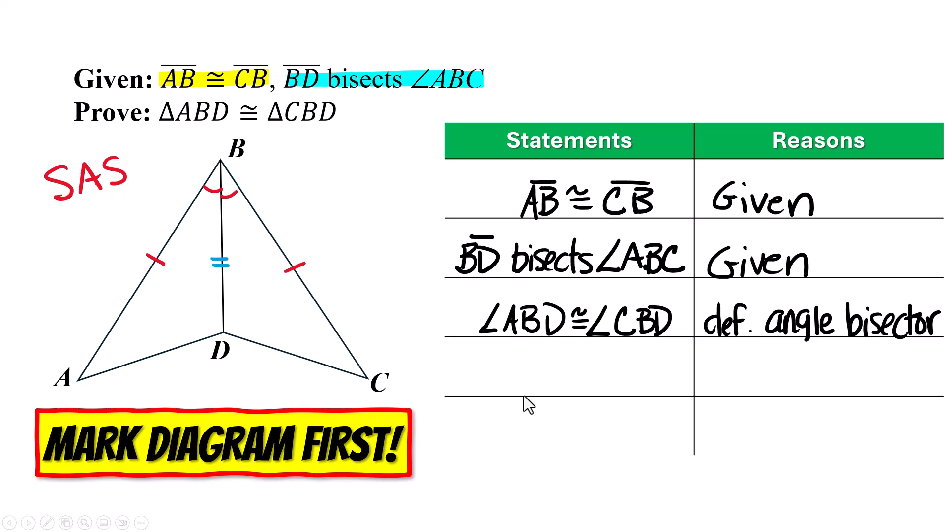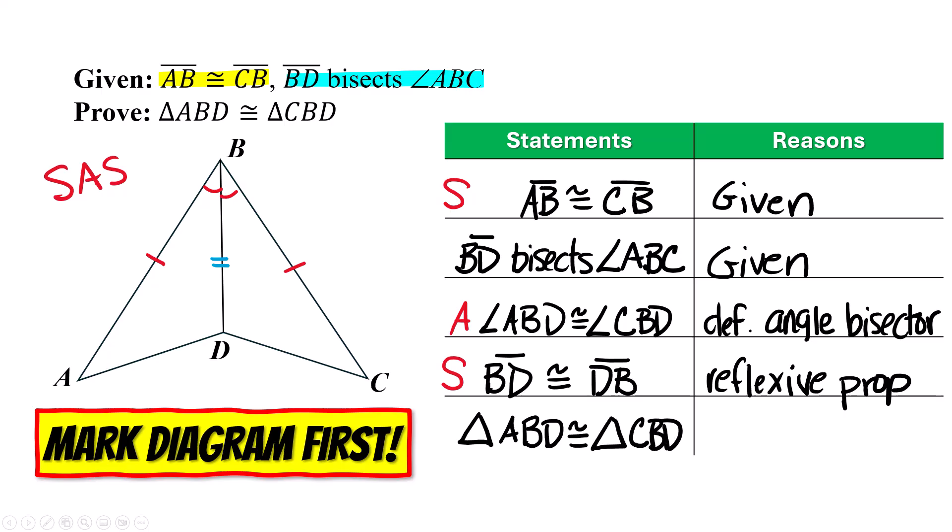The next thing I have is the one in the middle, right? The side in the middle. So BD is congruent to DB. That's because of reflexive property. So there's my side, there's my angle, and there's my side. And so I can say that the two triangles are congruent because of the side angle side congruency theorem.